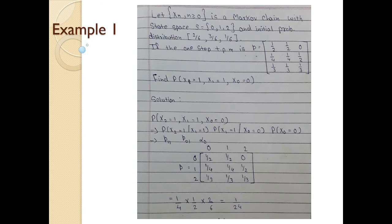This is Example 1. Let Xn be a Markov chain with state space S and initial probability distribution 2/6, 3/6, and 1/6. The one-step transition probability matrix is given. We are asked to find the probability of X2=1, X1=1, X0=0.